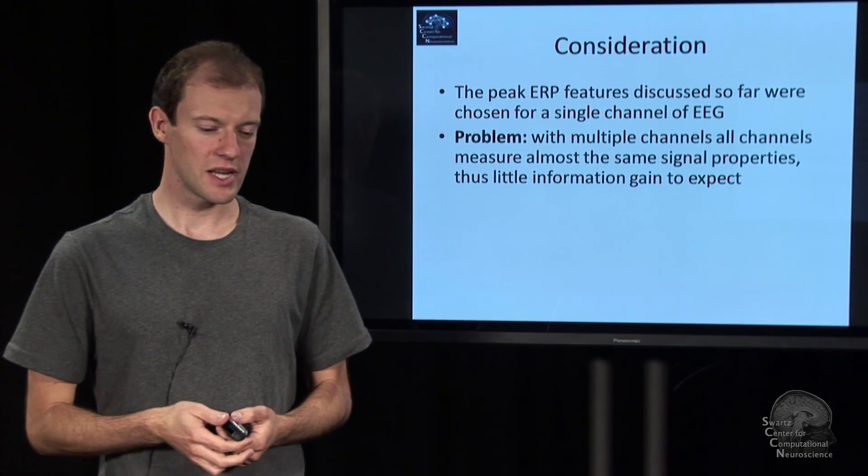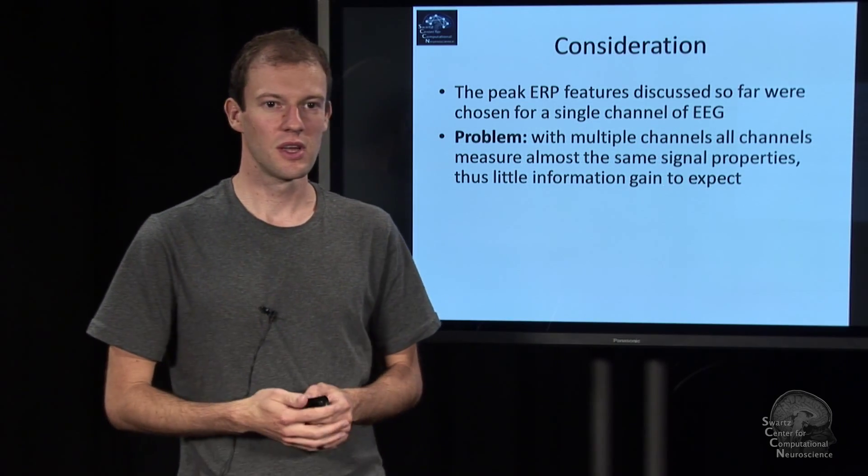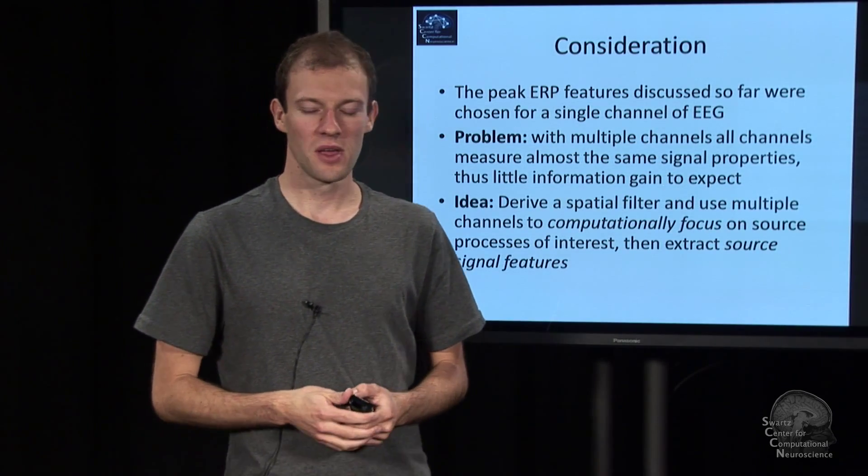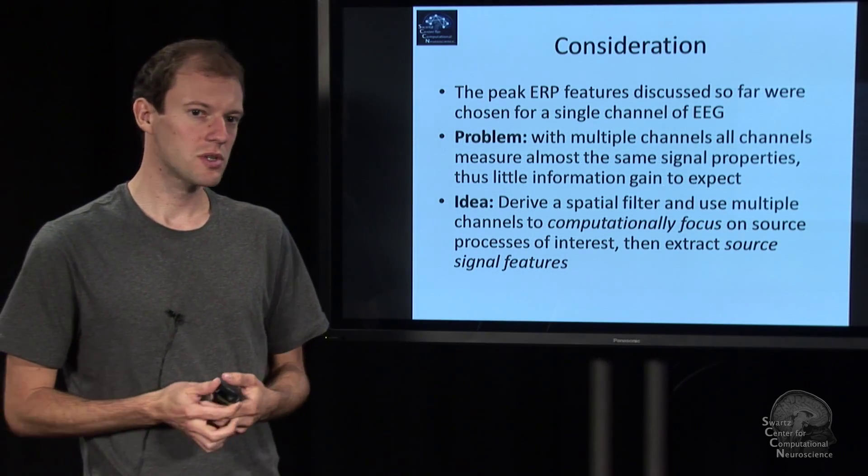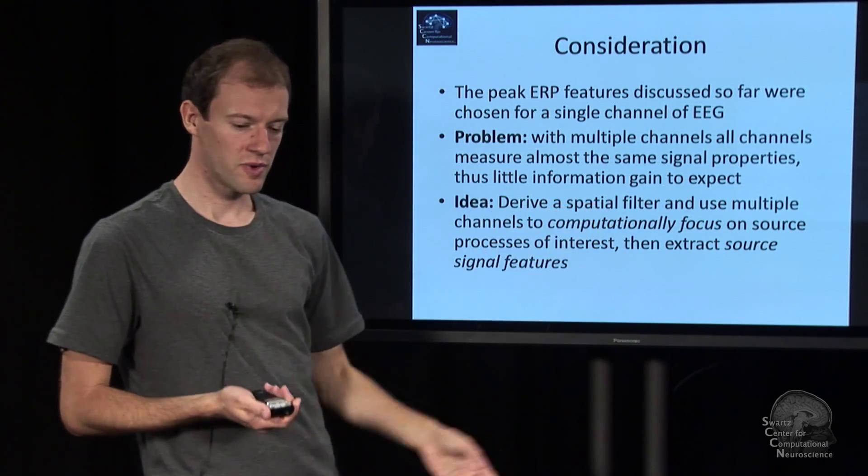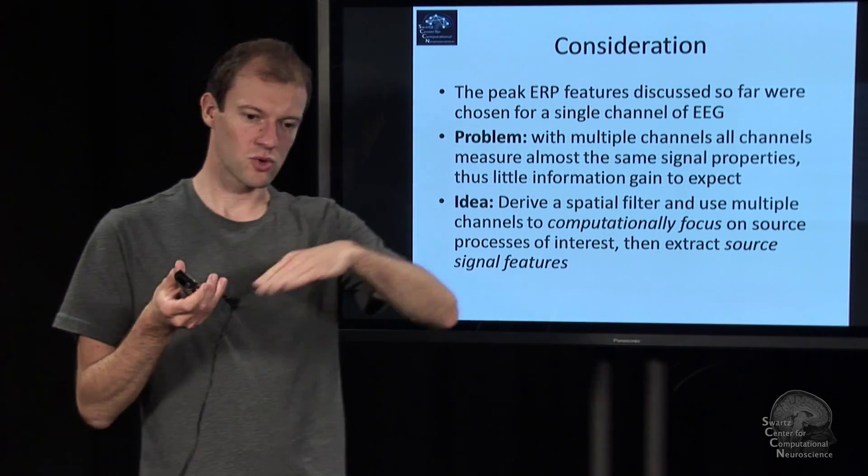We are also not really having spatial filters in there at all so far. It's just random features. And so can we design a BCI which learns spatial filters, which focus in a computational manner on a source time course?